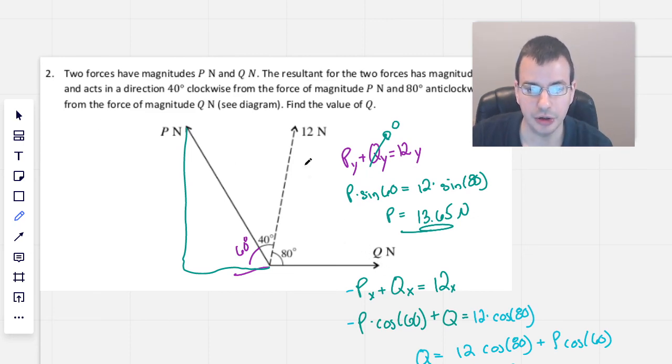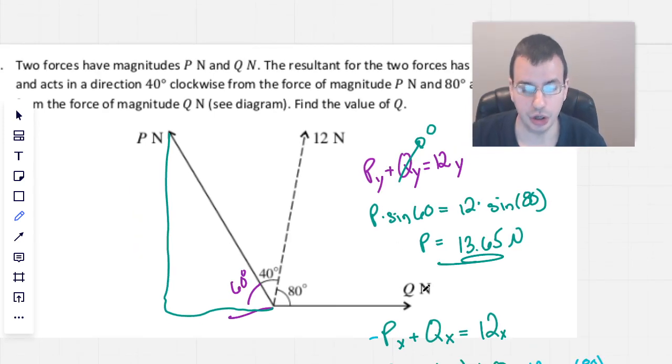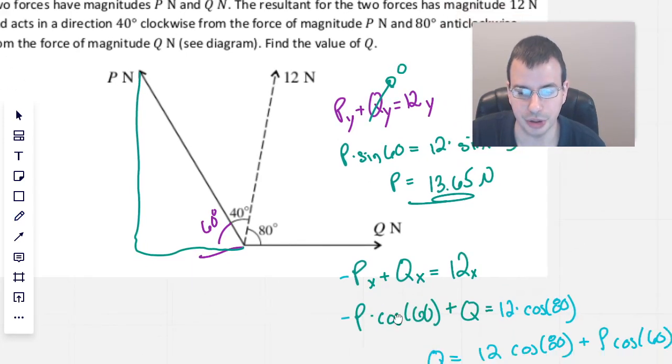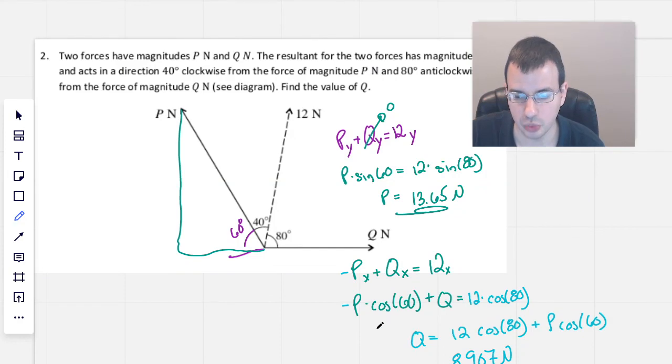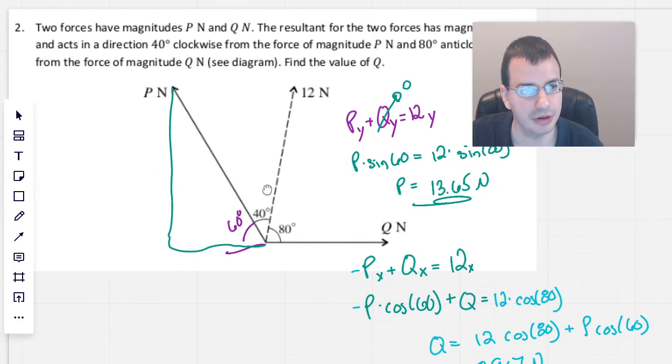And so we know the X components of P and Q have to add up to the X component of 12, and when we add up the Y components, the Y components need to add up to the Y components of 12. So we take those two points of data, we get two equations, two unknowns, and we just work through them. Not too bad. Fairly reasonable problem if you know how to do it. So I hope that helped. See you next time.